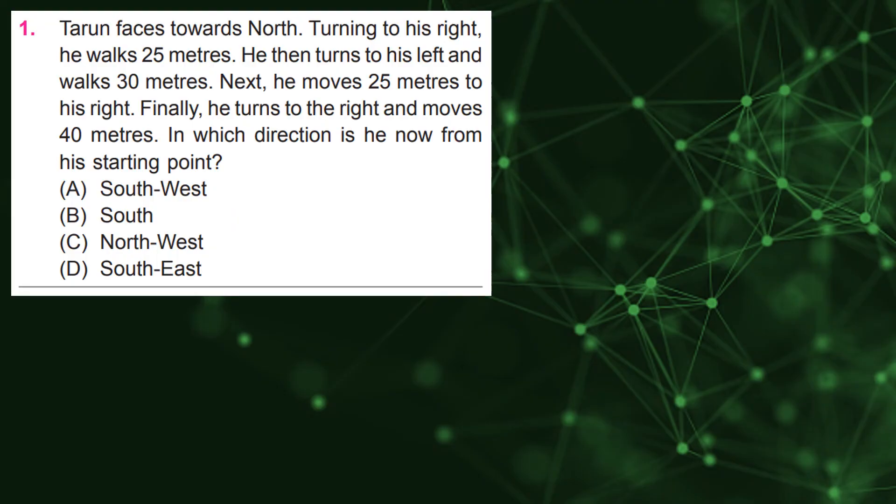Tarun faces towards north. Turning to his right, he walks 25 meters. He then turns to his left and walks 30 meters. Next, he moves 25 meters to his right. Finally, he turns to the right and moves 40 meters. In which direction is he now from his starting point? D, South-East.